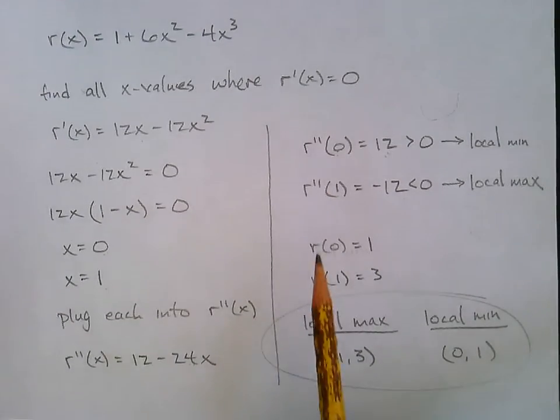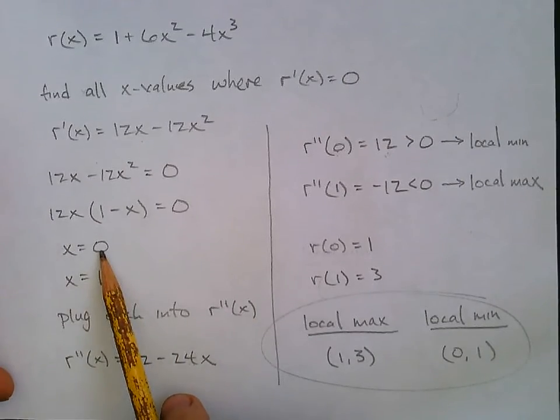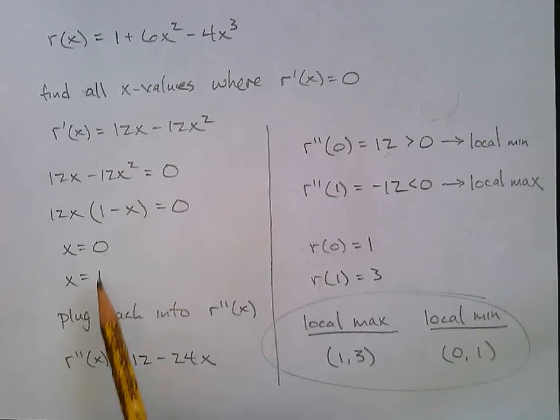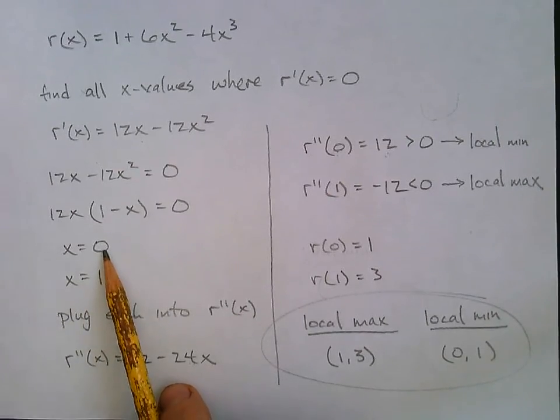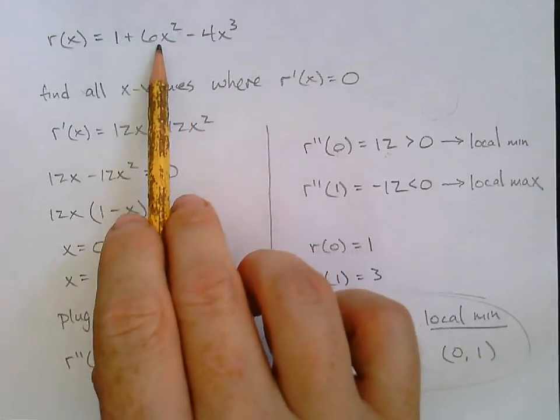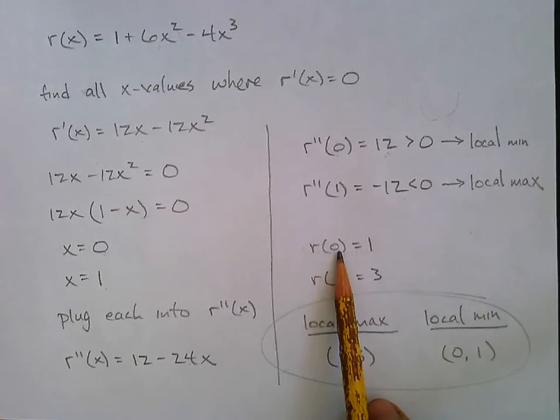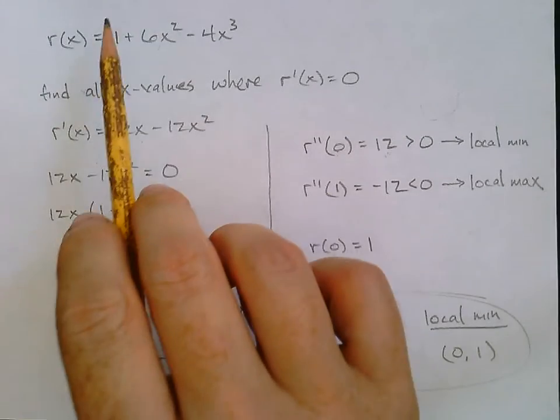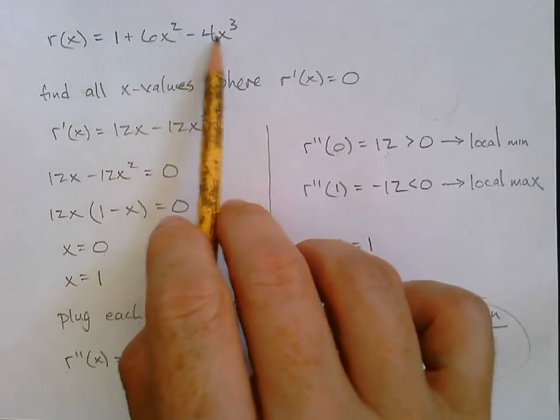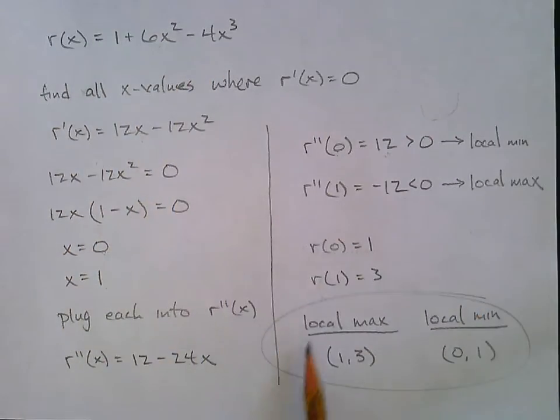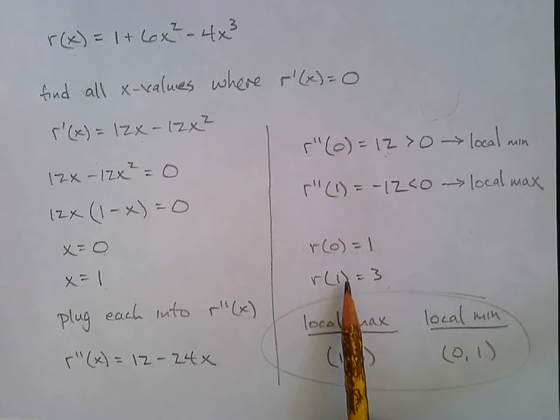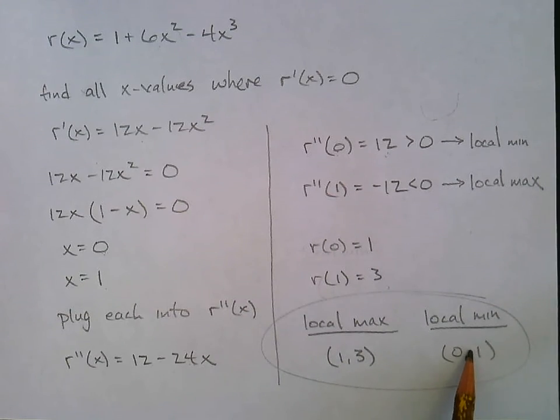So to finish the problem off, we need the entire ordered pair. We know that zero is a local min. One is at a local max. But what are their y values? Well, that's when we plug them in to the original function. So r of zero is one. R of one. What would that be? R of one. One plus six minus four. Seven minus four is three. R of one equals three. So we know there's a local max. I'll just list that one first at (1, 3). And there's a local min at (0, 1). We got the answer. With second derivatives. Pretty cool.